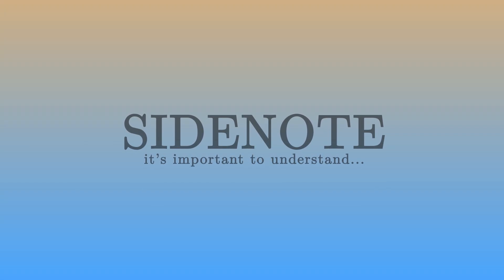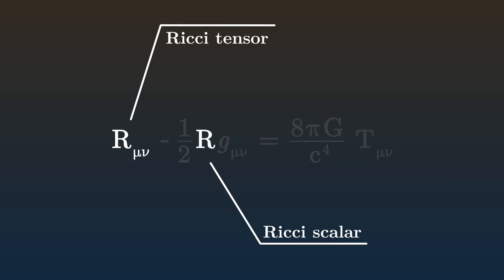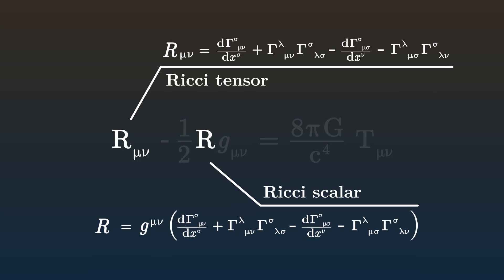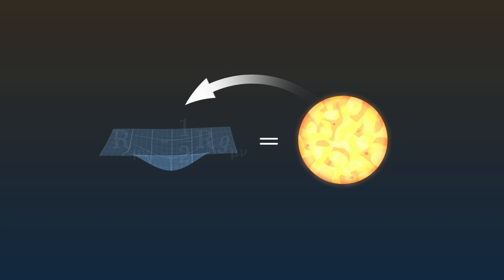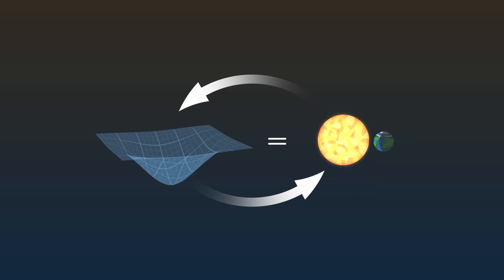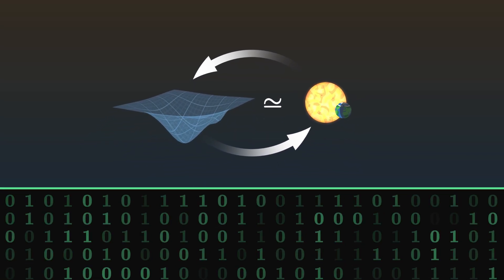It is important to understand that the Einstein equation is extremely hard to solve. As we saw previously, the Ricci tensor and the Ricci scalar, which appear on the left of the equation, contain complex calculations involving derivatives, sums, and products of the metric tensor. Moreover, the two sides of the equation are closely related: the content of the universe tells space-time how to bend, but conversely, the curvature of space-time dictates how objects move. Solving such an intricate problem on paper is almost impossible. In most cases, it is necessary to make approximations and computer simulations to solve such problems.